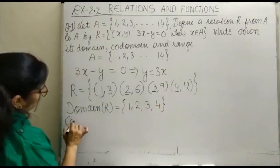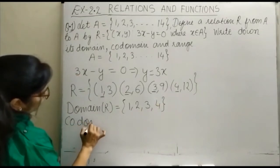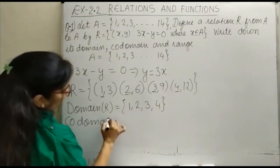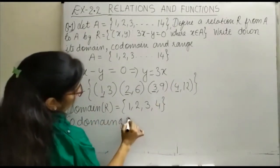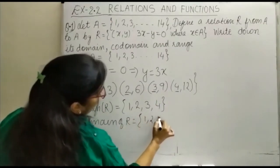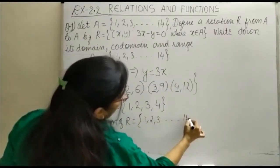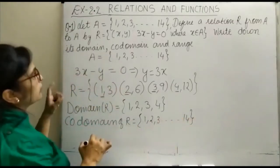Now, co-domain. Co-domain आपका second set होता है. Your co-domain is always the second set. Co-domain of R, यह आपका हो जाएगा 1, 2, 3, up to 14, that is equal to set A.